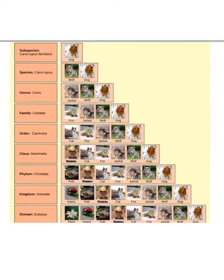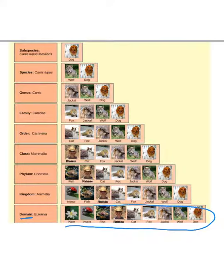I'll zoom in a bit. All right, so you'll notice that the domain is by far the broadest group. The domain for our family dog is eukarya. So in this clade, you have all organisms that are considered eukaryotes. So here's a nice selection of eukaryotic organisms.